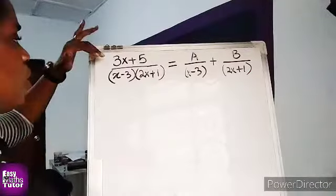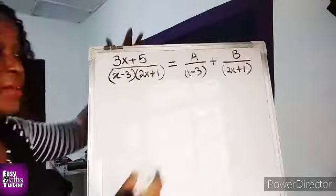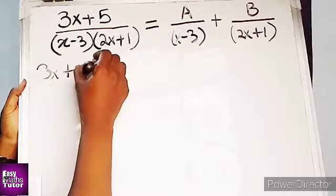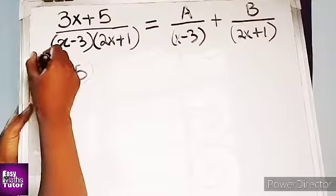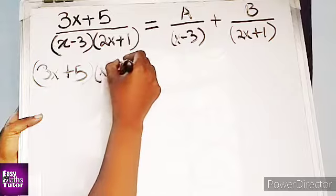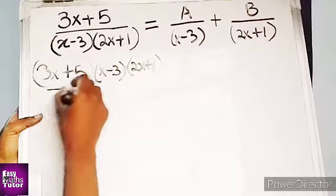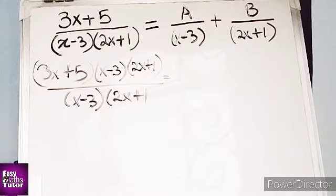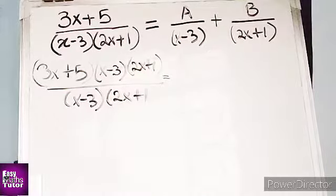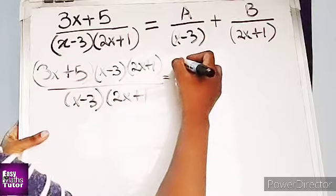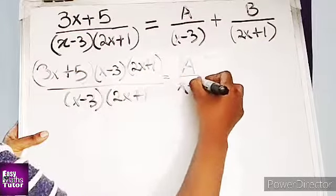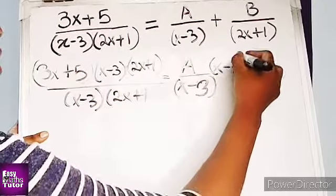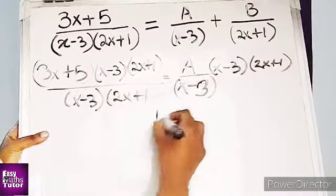We're going to multiply through — the left-hand side and the right-hand side by the denominator. So we'll say: 3x plus 5, multiplied by the denominator (x minus 3)(2x plus 1), all over (x minus 3)(2x plus 1). And we will also multiply each of these terms by this denominator. So we're going to have a, all over x minus 3, times the denominator (x minus 3)(2x plus 1).